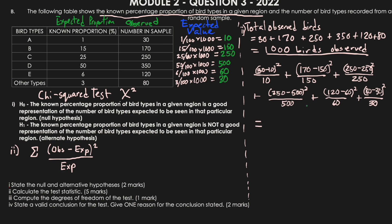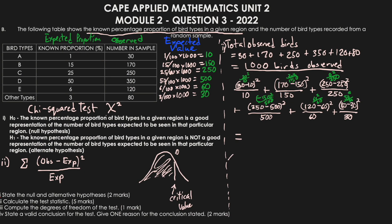Working out each term: 20² / 10 = 40, plus 20² / 150 = 8/3, plus 0² / 250 = 0, plus (−150)² / 500 = 45, plus 60² / 60 = 60, plus 50² / 30 = 250/3. Adding all these together gives us a test statistic of 231.